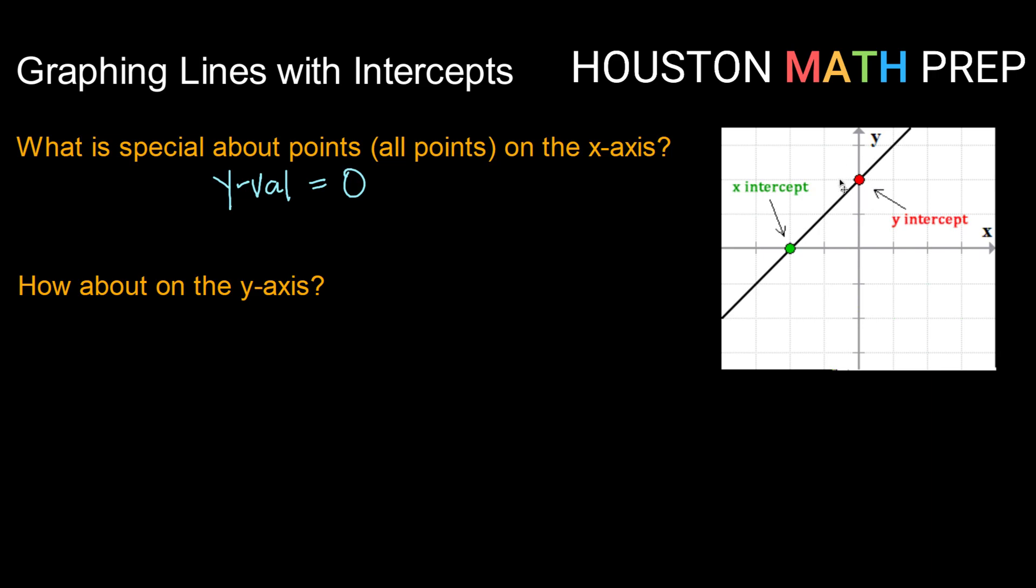What about points on the y-axis or y-intercepts? They are the opposite. They only have vertical movement or y-movement, but they do not go left or right at all, meaning that they have an x-value that is zero. So that's going to allow us to quickly find intercepts and use them to graph our lines.